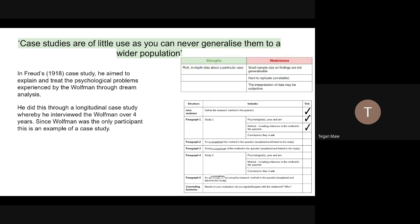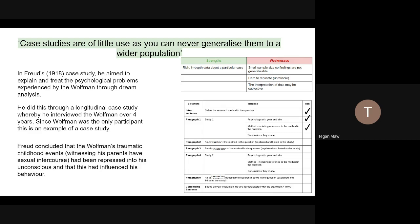Finally then, the conclusions that he made. Freud concluded that the Wolfman's traumatic childhood events, witnessing his parents have sexual intercourse, had been repressed into his unconscious mind and that this has influenced his behaviour. So I've got three things, well kind of more than three things really there, about Freud's study to hit those first three AO1 marks.